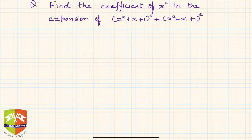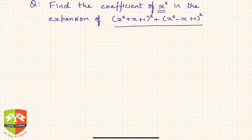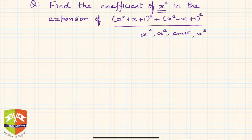In this next question, we have to find the coefficient of the x² term in the expansion of a given algebraic expression. The coefficient is the constant attached to a particular term. In this expansion there will be terms containing x⁴, x³, x², x, and a constant term, and we need the coefficient of x².